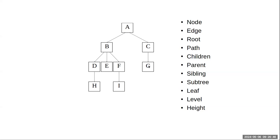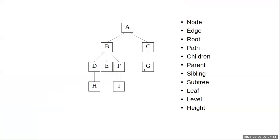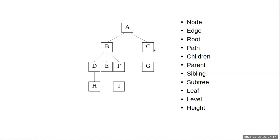A leaf node is a node that has no descendants. In this tree, H, I, and G are leaf nodes because they have no descendants. The level tells how far down the tree you are — the root is at level zero; B and C are at level one; D, E, F, and G are at level two; H and I are at level three. The height of the tree is the maximum level, so the height of this tree is three.